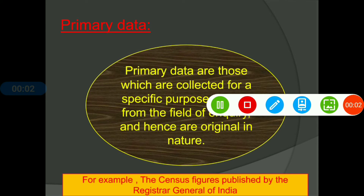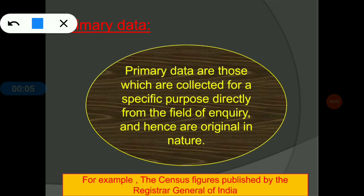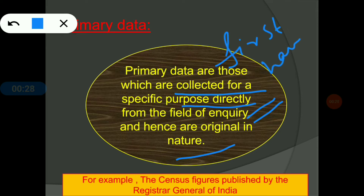Primary data are those data which are collected for a specific purpose directly from the field of inquiry, and hence are original in nature. That means someone collected the data from the original source, which is why primary data is known as first-hand information. An example is government publications like census figures published by the Registrar General of India.